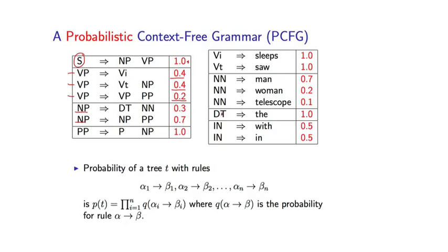So these probabilities have a clear interpretation. They are the conditional probability of, conditioned on a particular non-terminal, we have multiple different ways of rewriting that non-terminal. We now have a distribution over those different options, over those different ways of rewriting that particular non-terminal.